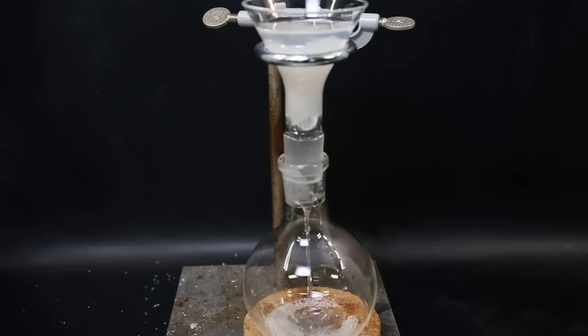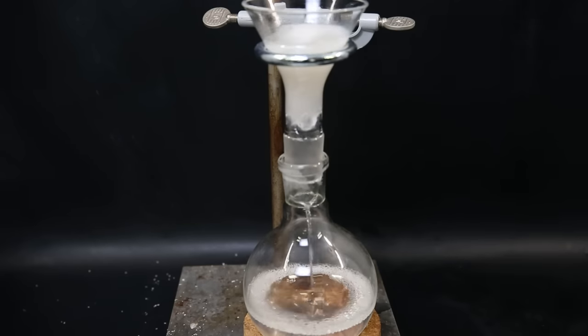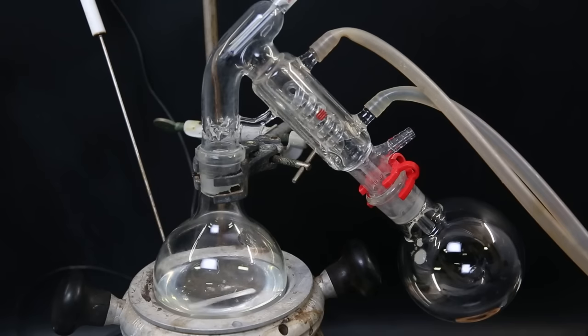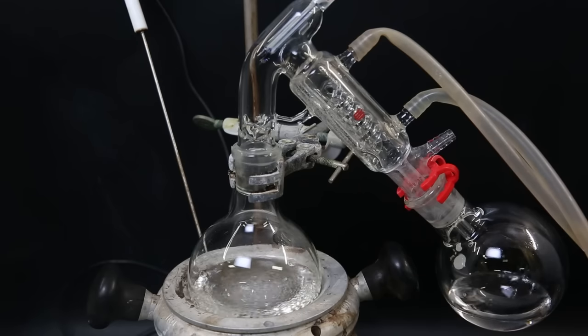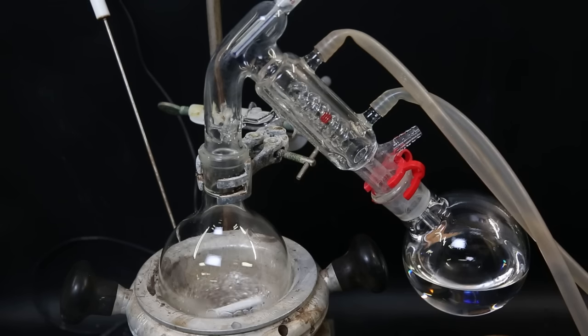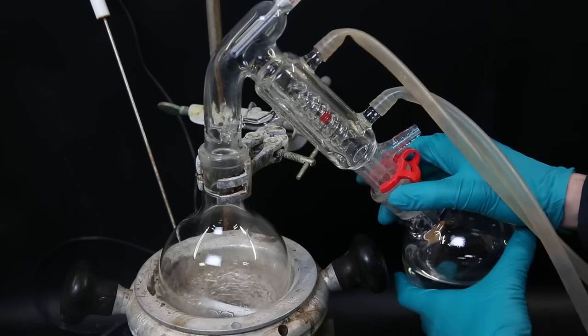I then filtered the mixture through some cotton directly into a flask. I then distilled the filtrate with short path distillation to boil off the THF and toluene. After a while, it stops coming over, so I swap the receiving flask.